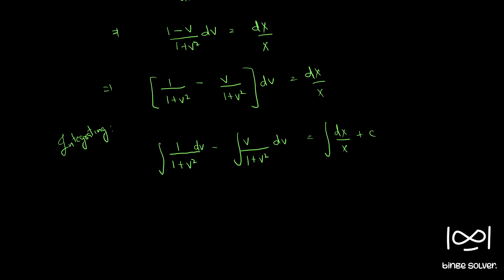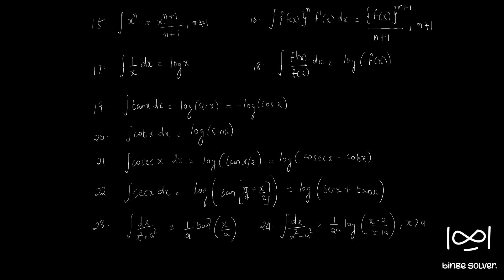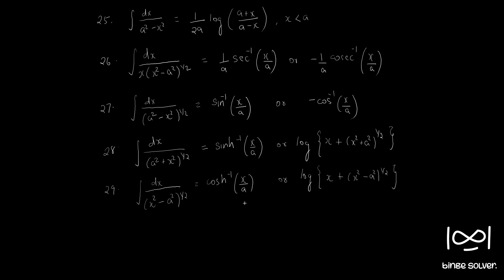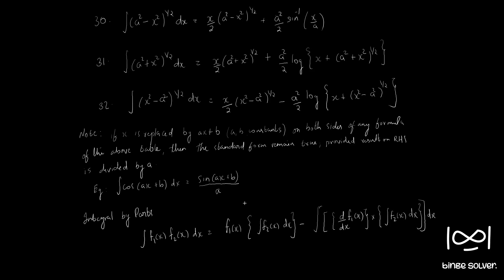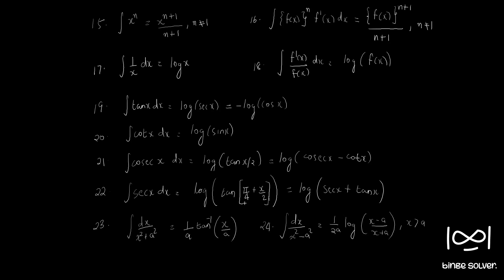Integrating both sides, we use a standard formula: the integral of dx/(a squared plus x squared) equals (1/a) tan⁻¹(x/a). This is standard result number 23, which is very useful for solving such questions involving integration of complex terms.